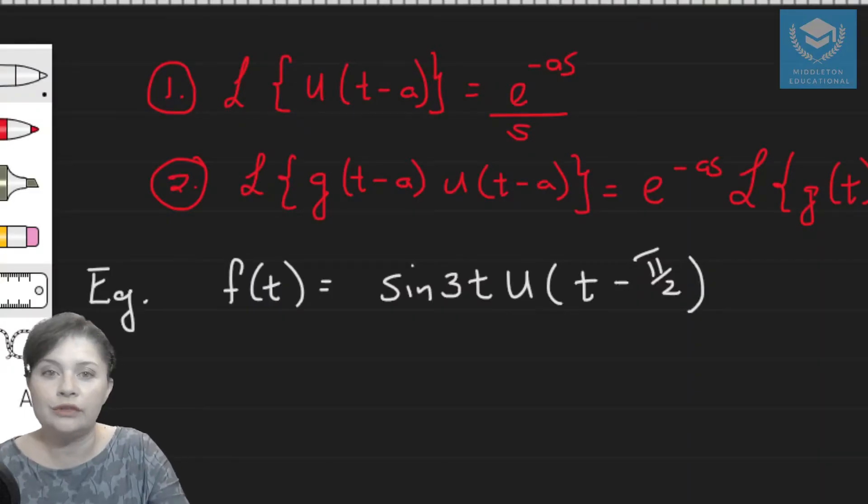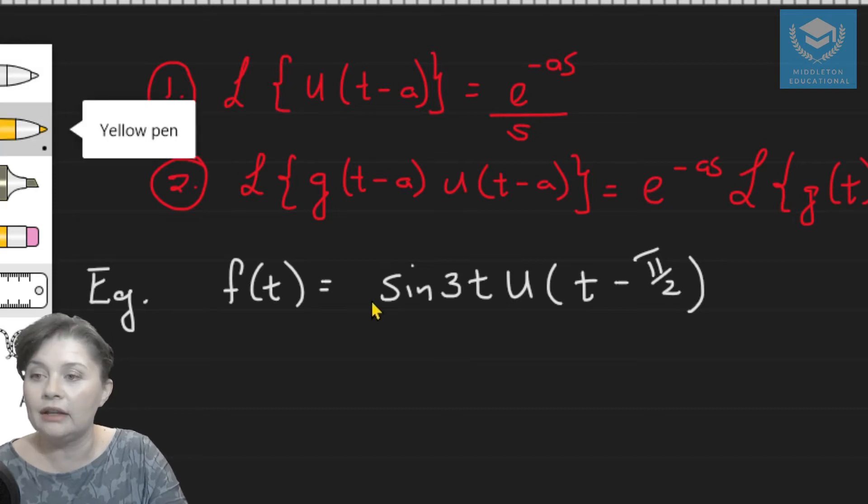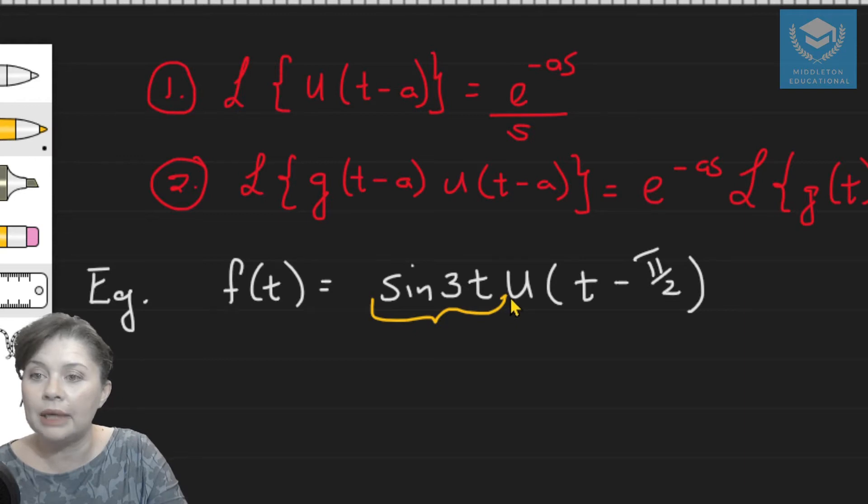So here we've got the two shifting theorems that we're going to be using, number one and number two, the first shifting theorem and your second shifting theorem. We also have our example, and in this example we're using a trig function. So you'll see the first thing you need to do is to try and figure out what is your function f(t) made up of? We have a function multiplied by the Heaviside step function.